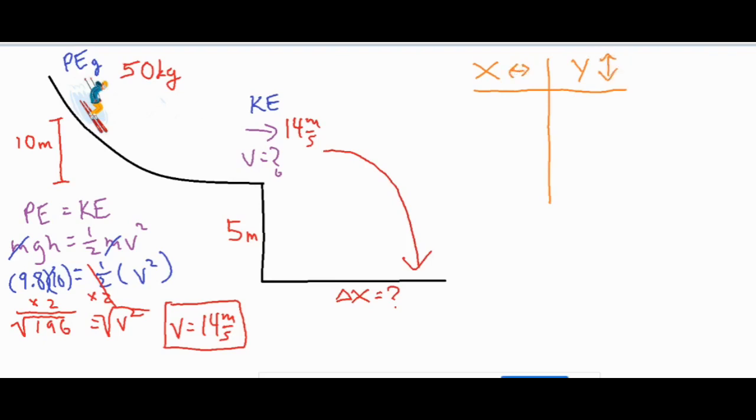We do this because all horizontal motion is constant velocity—there are no forces acting left or right once the skier leaves the edge. But gravity pulls vertically, straight down toward the center of the earth, so all vertical motion is accelerated.